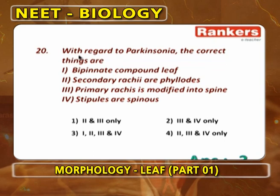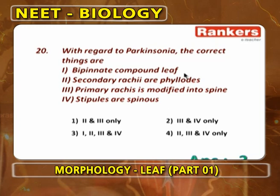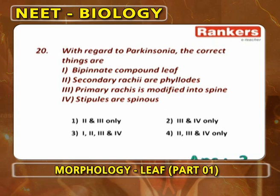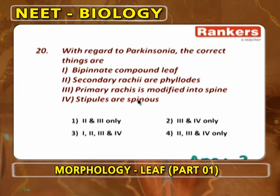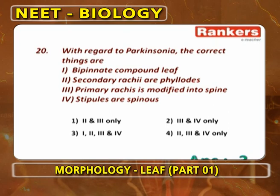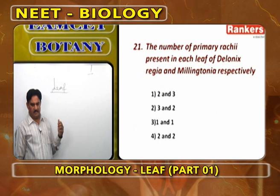Regarding Parkinsonia, all four statements are correct: bipinnately compound leaf; secondary rachis modified into phyllode; primary rachis modified into spine; stipules are spinous. So the answer is that all four options (1, 2, 3, 4) are correct for Parkinsonia.